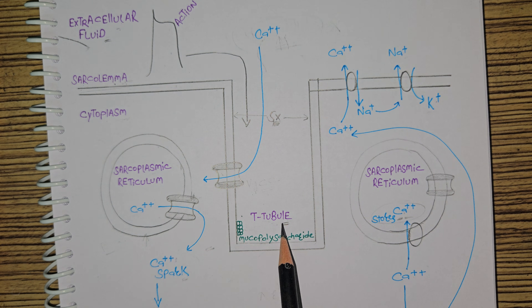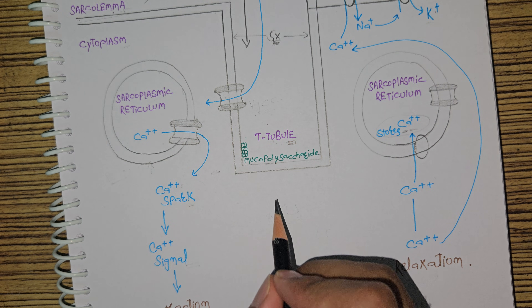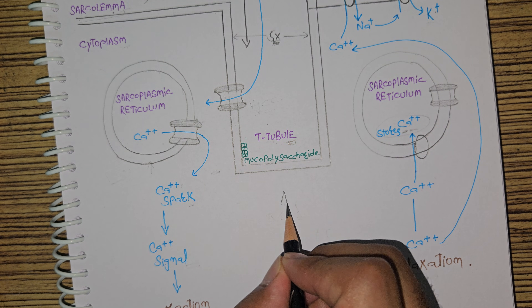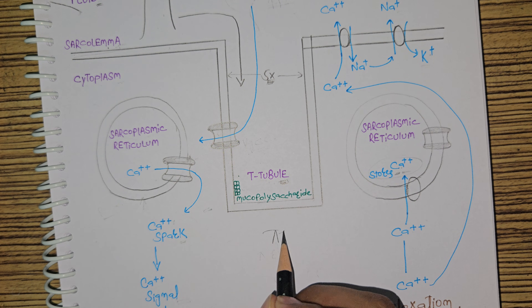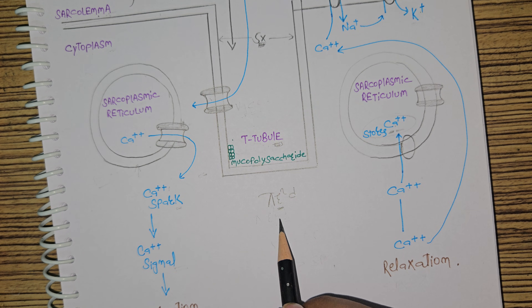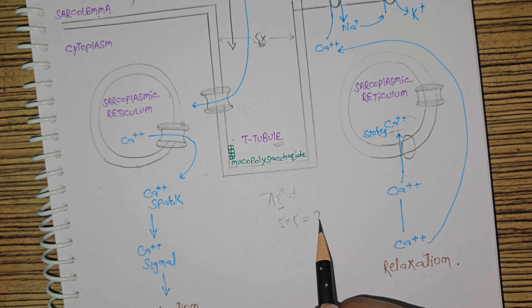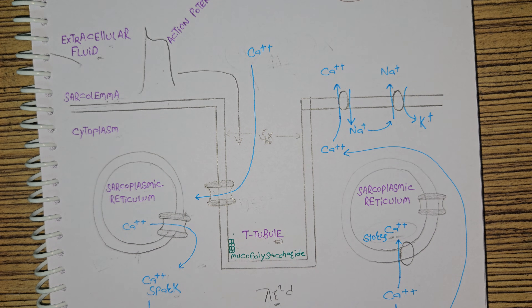This implies the T-tubule in the cardiac muscle cell is 25 times more in volume than in the skeletal muscle cell, because the volume of a cylinder is π r² d. The radius squared gives 5 × 5 = 25 times. So the volume of the T-tubule in the cardiac muscle cell is 25 times more than in the skeletal muscle cell.